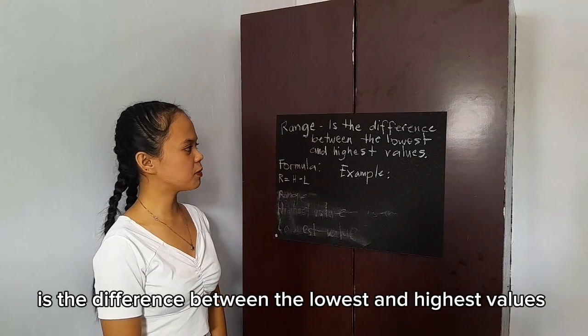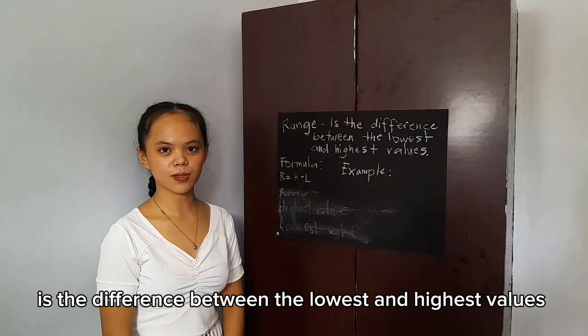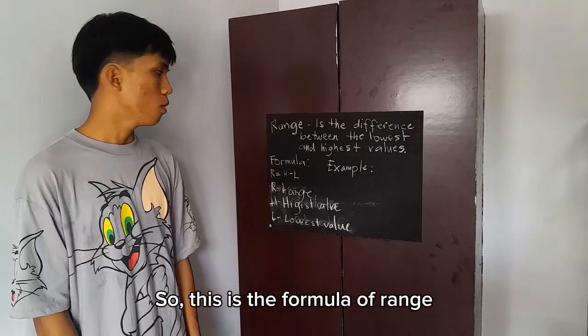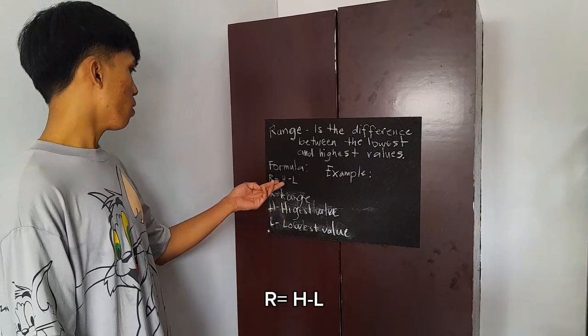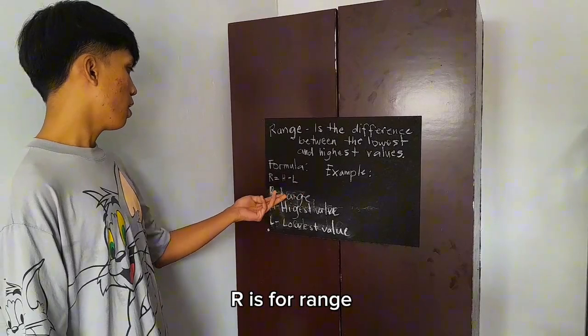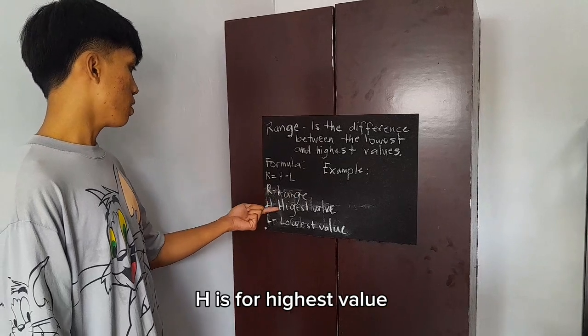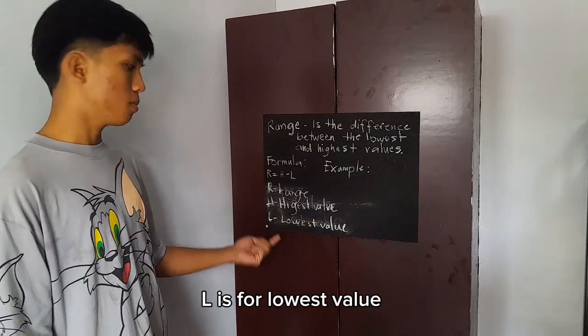Range is the difference between the lowest and highest values. So this is the formula of range: R equals H minus L. R is for range, H is for highest value, and L is for lowest value.